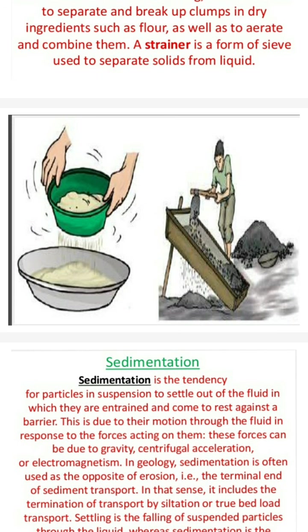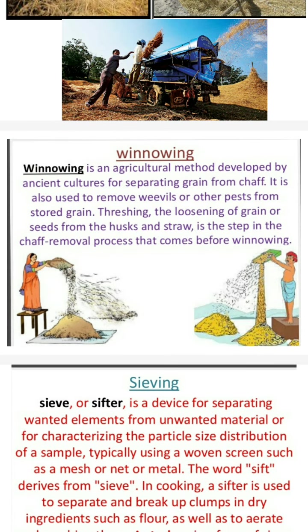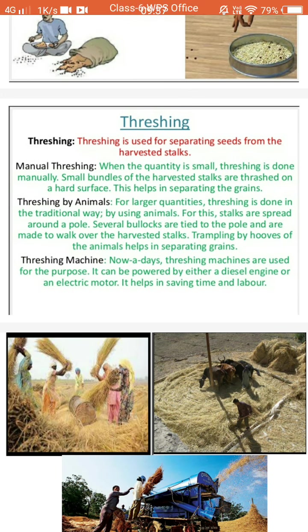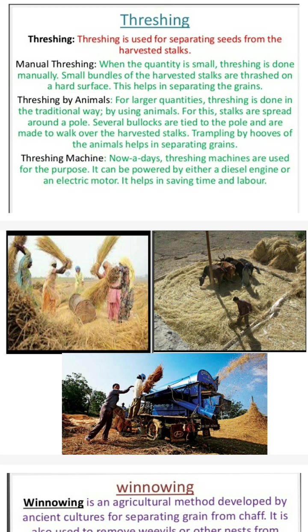For tea, we use a sieve — to separate unwanted materials. When we clean our house or grain, it will be separated. Unwanted grains, pebbles, broken grains, insects which come into our food — we use rice and wheat cleaning methods like hand-picking. Nowadays, machines are used for threshing and winnowing because it helps in saving our time and labor.